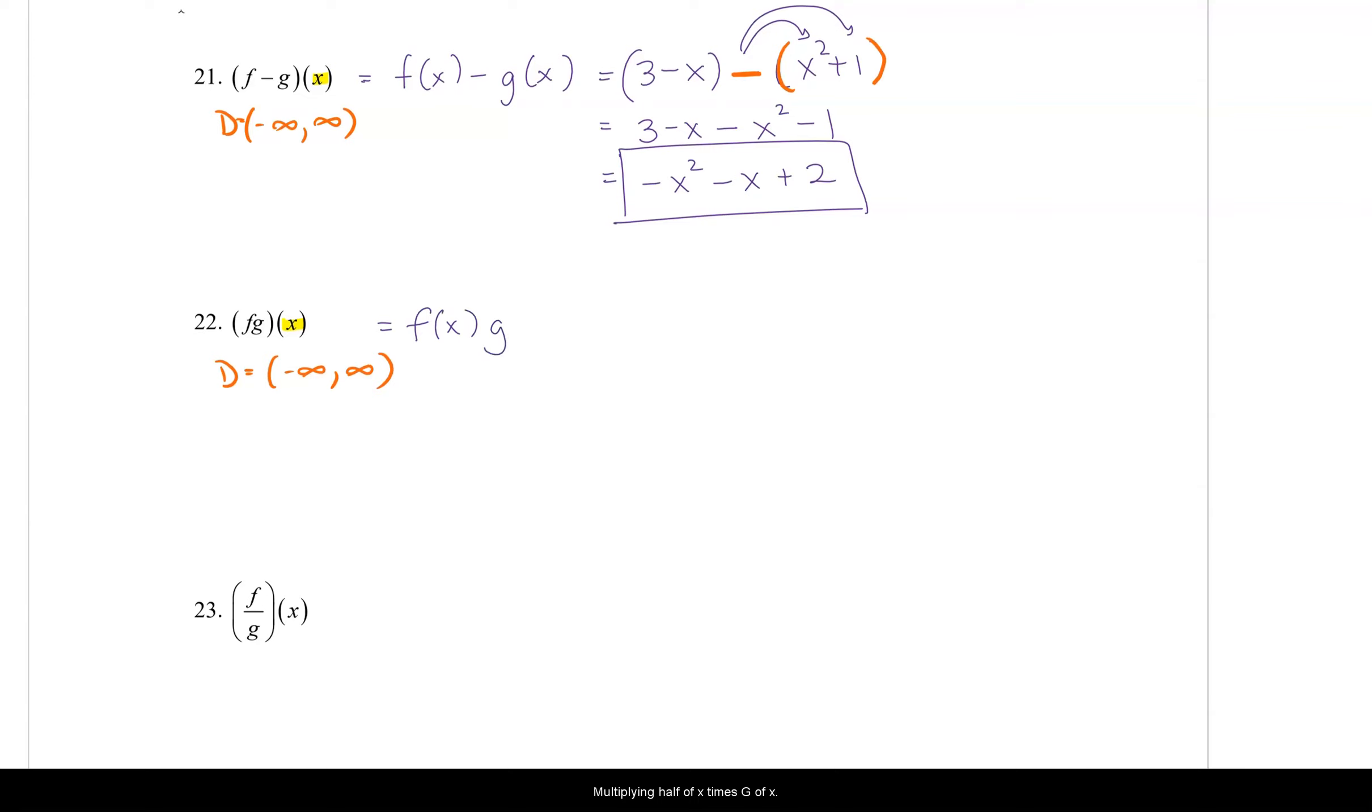Multiplying f(x) times g(x), 3 minus x times x squared plus 1. You can foil this because it is two binomials. Or I like to use the box method because it always works no matter how many terms you have. 3 minus x, x squared plus 1. I write my terms around the box. And then inside the box goes each product of what's on the sides. So 3 times x squared, x squared times negative x, 3 times 1. And then 1 times negative x. And then I write everything inside the box, 3x squared minus x to the third. I'm actually going to start with my highest power. Minus x to the third plus 3x squared. Minus x plus 3. That is my f times g of x function.